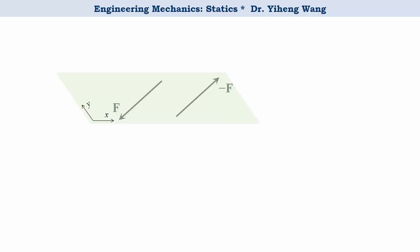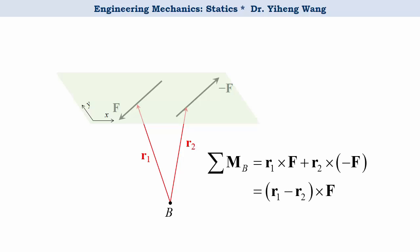Even if we calculate the total moment about a point B that is not in the current x-y plane, we can use the vector formulation: the total moment equals position vector R1 cross F plus position vector R2 cross negative F, which equals (R1 minus R2) cross F. After applying vector calculation, this still equals a moment with a magnitude of F times d pointing in the positive z direction — the same moment calculated about point O and point A earlier.